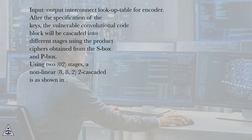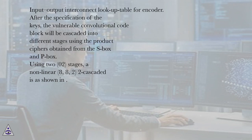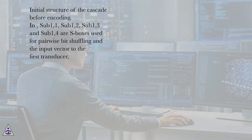After the specification of the keys, the vulnerable convolutional code block will be cascaded into different stages using the product ciphers obtained from the S-box and P-box. Using 2,0,2 stages, a non-linear 8,8,2 two-cascaded structure is shown as the initial structure of the cascade before encoding.